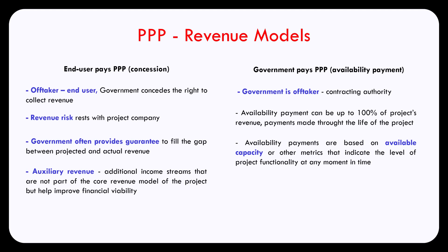The availability payment is calculated in such a way that it covers both variable and fixed costs. It has to be sufficient to cover operating costs, as well as the repayment of debt, the interest on that debt, and the repayment of investment, along with the return on that investment. There might be revenue from end-users in this type of project, and it is either passed on to the government or shared with the project company.